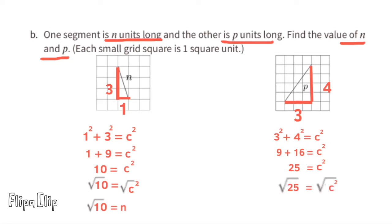The square root of 25 is 5, so c equals 5. In this case, the missing side length p equals 5 units.